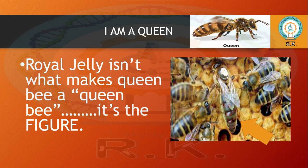Honey bees are social animals like humans — there are different castes observed. The first and most important is the queen. The queen bee is largest in size among different bees, with a wider abdominal region. This is how you can easily identify the queen — by her larger body size.